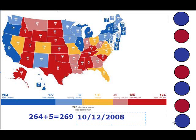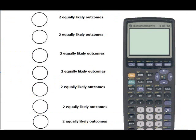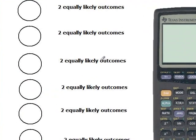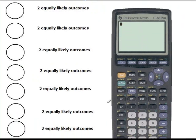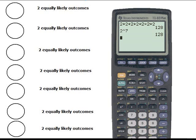Let's count how many possible outcomes there are. These seven states are each going to give us two equally likely outcomes — red or blue. If we assume that they vote independently of each other, then how many possibilities do we have? We just multiply two by itself seven times, or just take two to the power seven. How many possibilities do you get? 128. So there are 128 equally likely outcomes for the toss-up states.